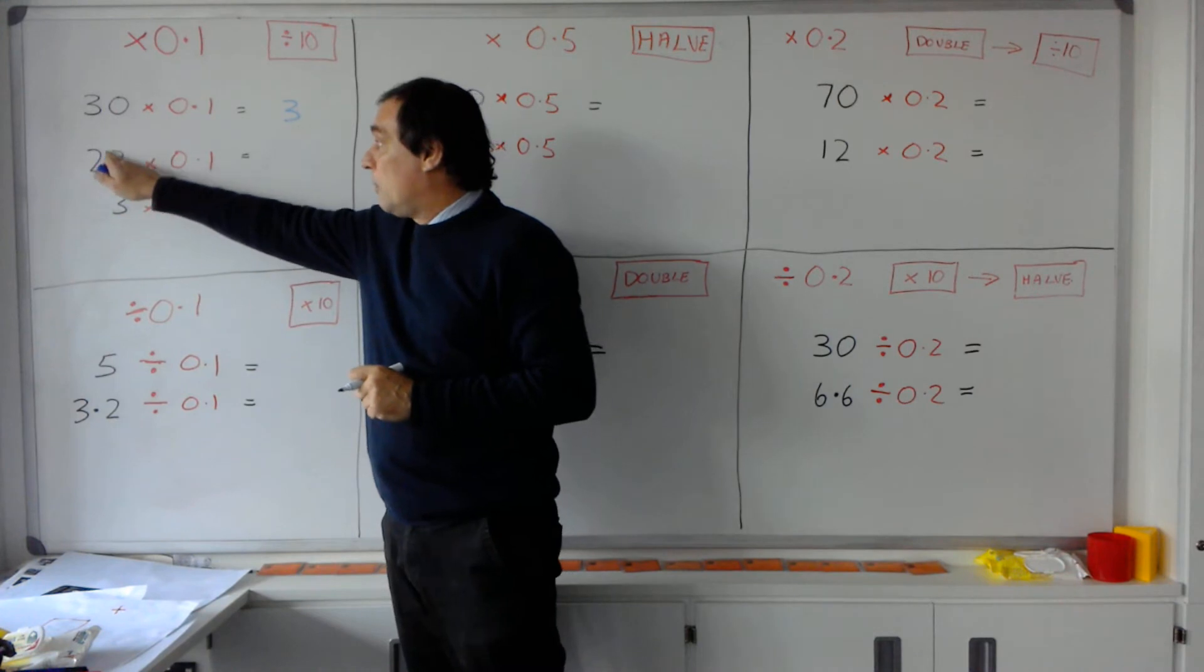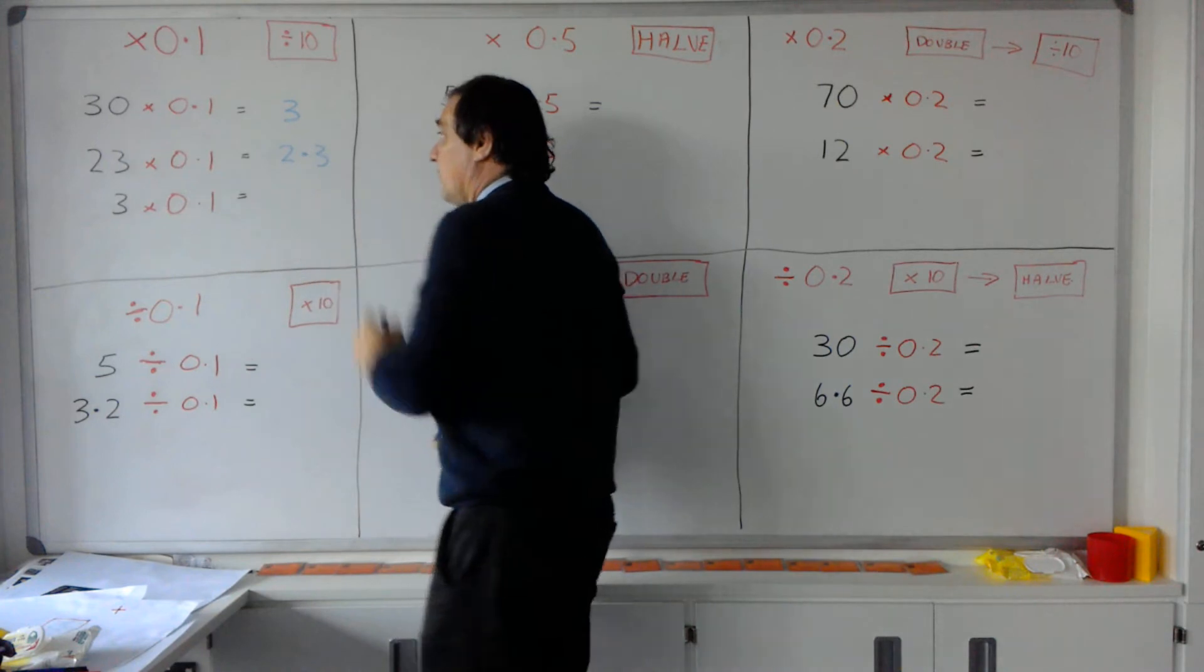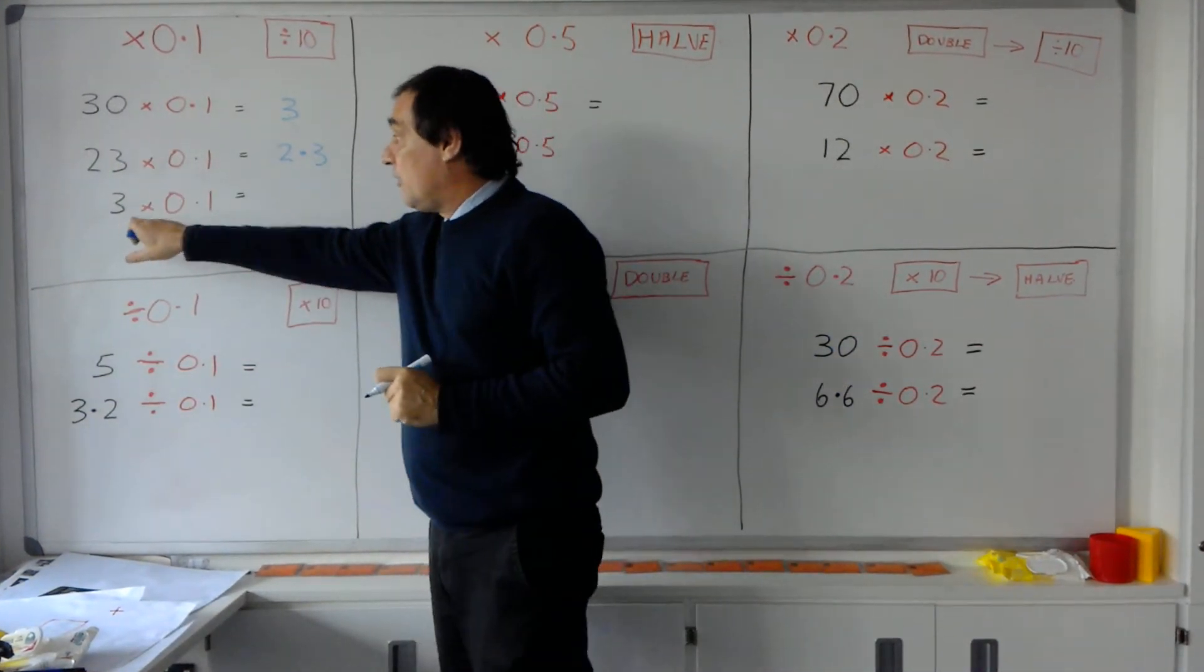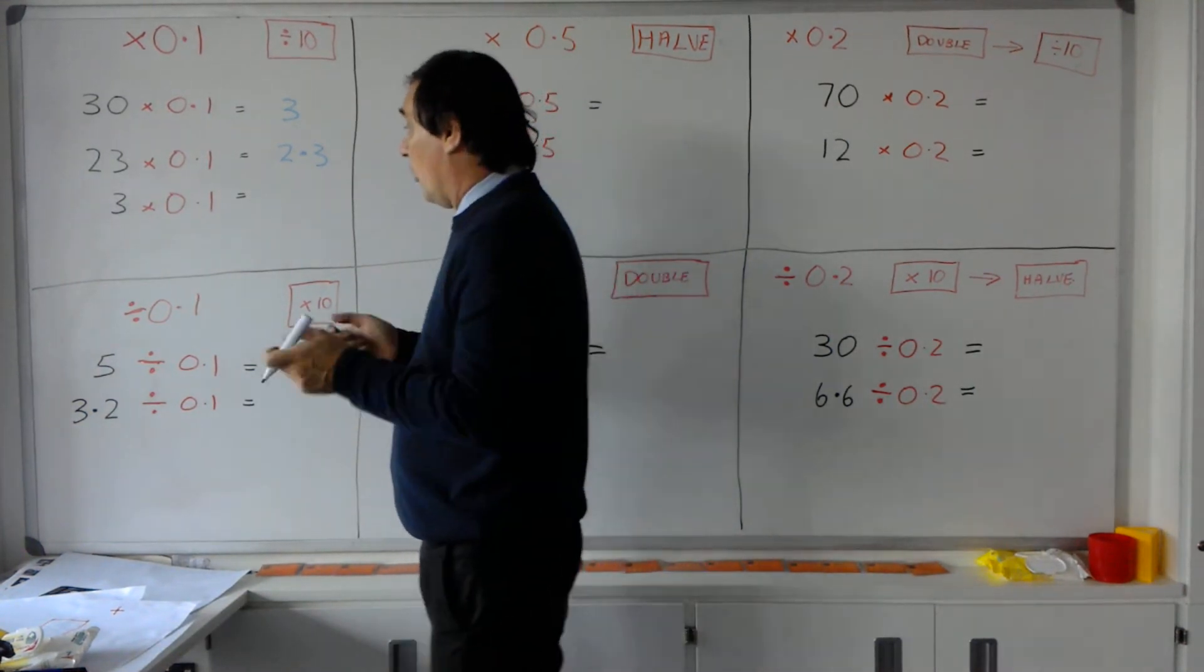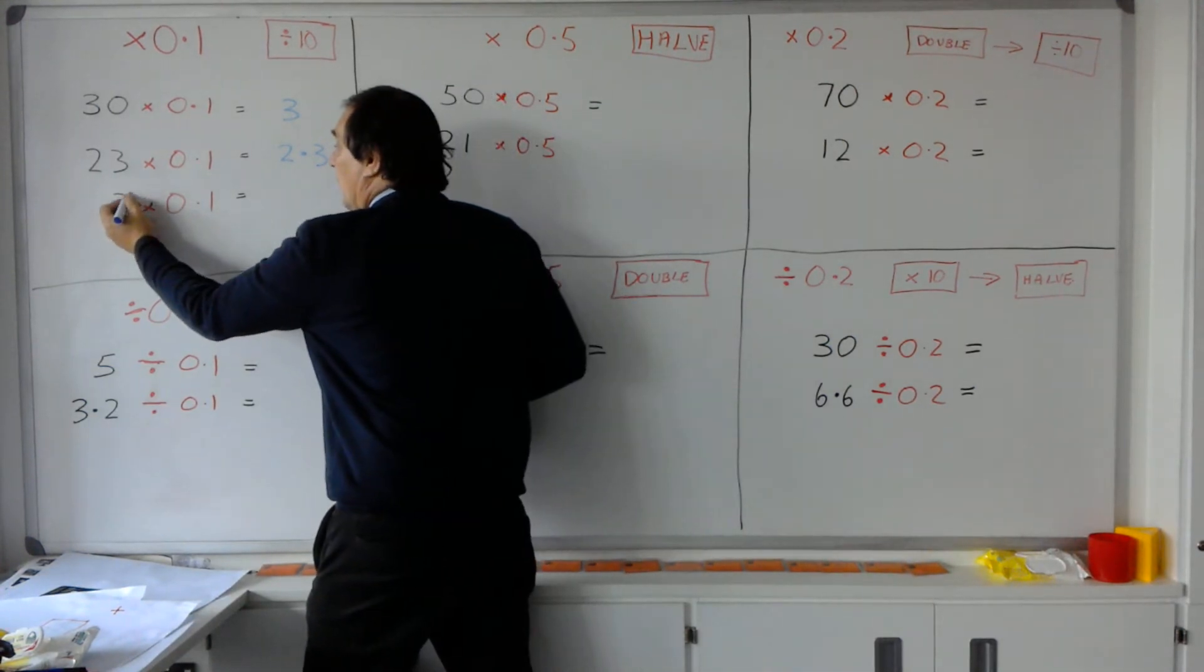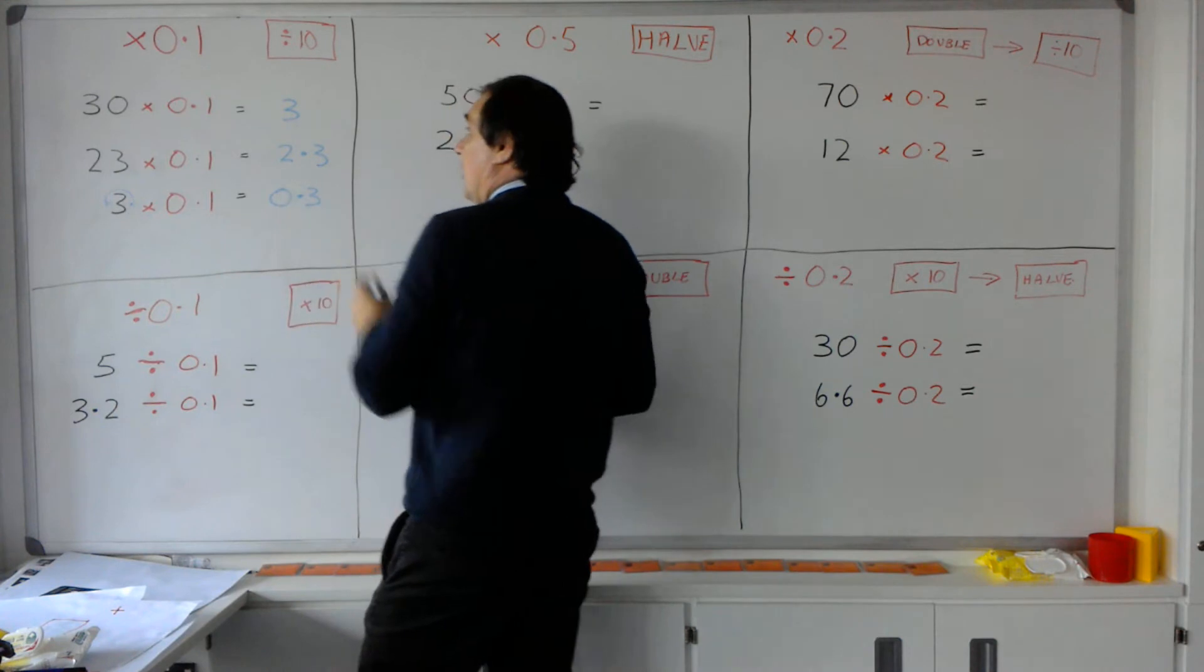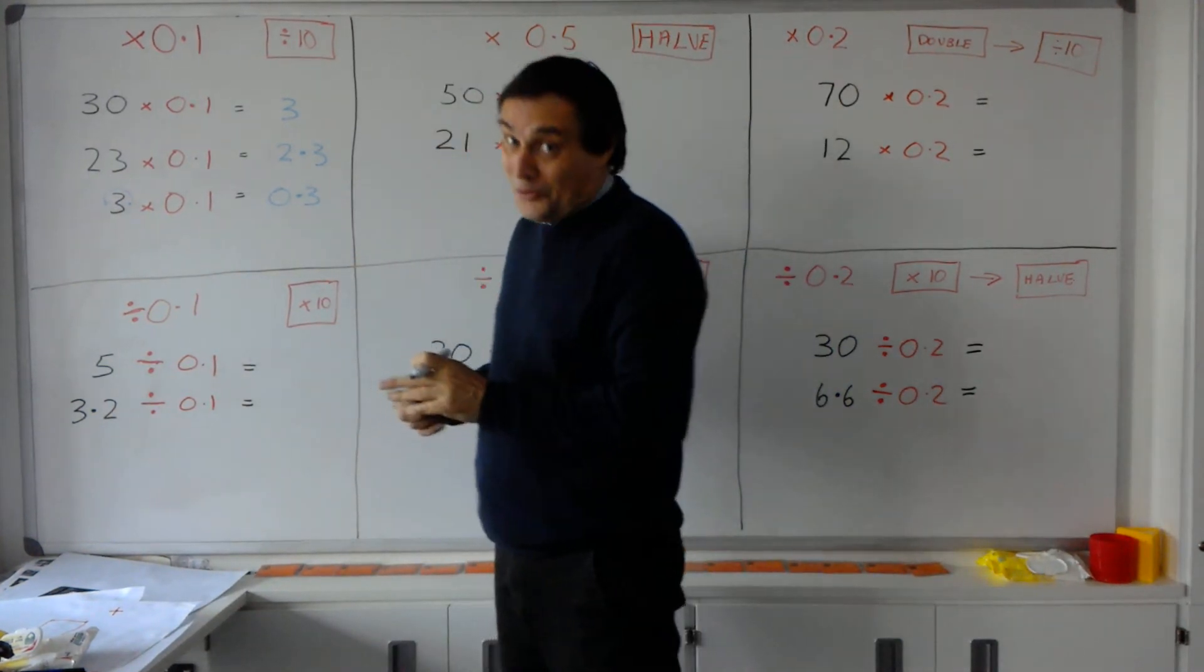As I haven't got a zero on the end, I've got to move a decimal point up to give me an answer of 2.3. And the last example we'll do here in this section is if I've got 3 times 0.1, well, it means 3 divided by 10, so I've moved a decimal point over here to give me 0.3. So to recap, multiplying by 0.1 is exactly the same thing as divided by 10.